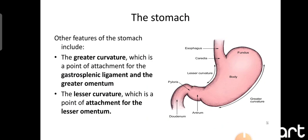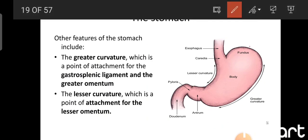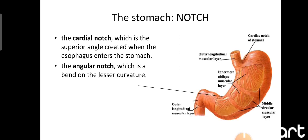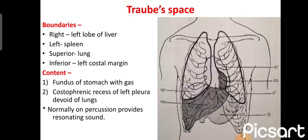The curvatures of the stomach: the greater curvature is larger in size and gives attachment to the greater omentum and the gastrosplenic ligament. The lesser curvature is smaller and gives attachment to the lesser omentum. There are two notches: the cardiac notch, which is the superior angle created when the esophagus enters the stomach, and the angular notch or incisura angularis, which is the bend on the lesser curvature.